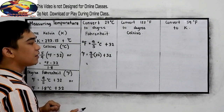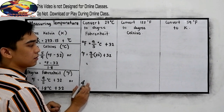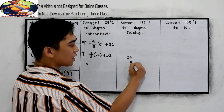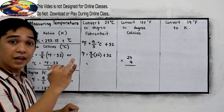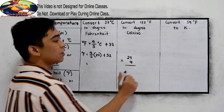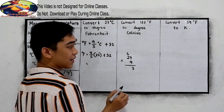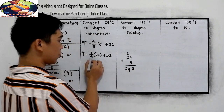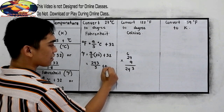Now simplify. We compute 9 times 27. 9 times 7 is 63, carry the 6. 9 times 2 is 18, plus 6 is 24. So 9 times 27 equals 243. Therefore we have 243 over 5, plus 32.